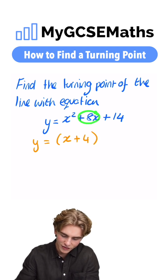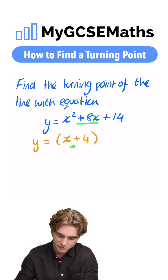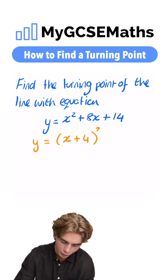If this number was negative, then this would be negative, but here because it's positive 8, this is positive 4. Then what are we going to do? We're going to square our bracket.